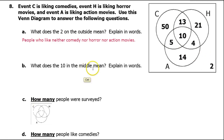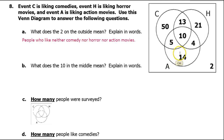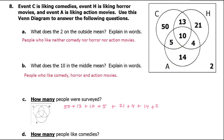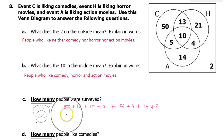What does the ten in the middle mean? Well, these are people who like comedies and horrors and action movies. How many people were surveyed? You would just have to add up all of the numbers on the Venn diagram, and that turns out to be 119.